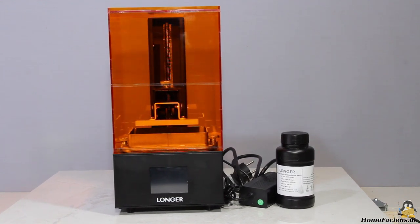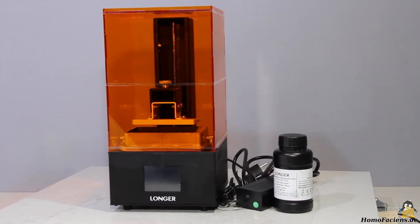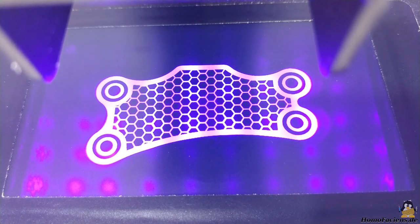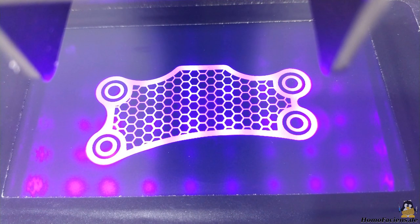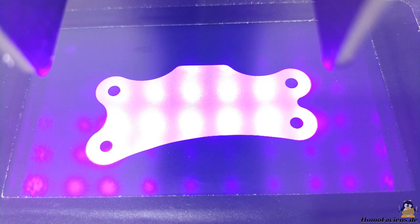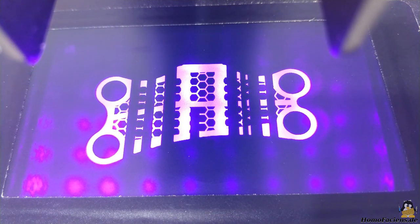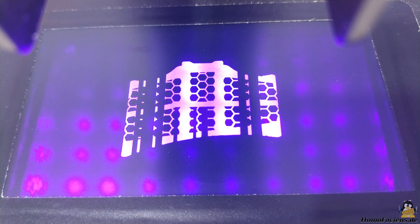Photosensitive resin is hardened layer by layer using ultraviolet light. The mask for selective exposure of the individual layers is generated by an LCD screen. The resin remains liquid at the unexposed areas in the layer, where ultraviolet light hits the resin, it solidifies.